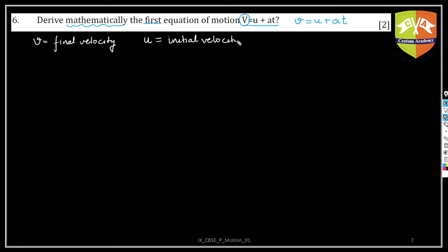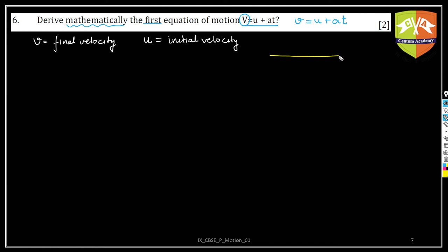Now what is this initial and final business? Basically, this applies to a journey happening in a straight line — always remember that. Or you are treating v and u as speeds, in which case even a curved surface is fine. But as far as ninth grade is concerned, we are going to restrict our analysis to straight line motion.